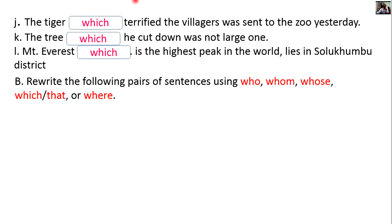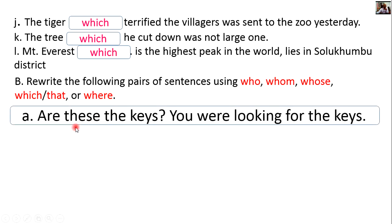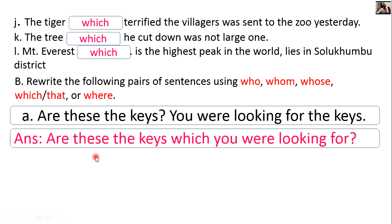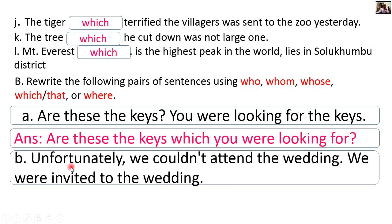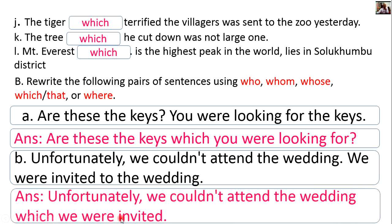Rewrite the following pairs of sentences using who, whom, whose, which, that, or where. Are these the keys you were looking for? — Are these the keys which you were looking for? Unfortunately, we couldn't attend the wedding we were invited to. — Unfortunately, we couldn't attend the wedding which we were invited to.